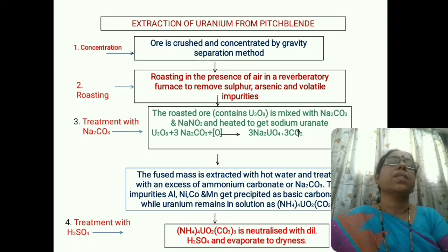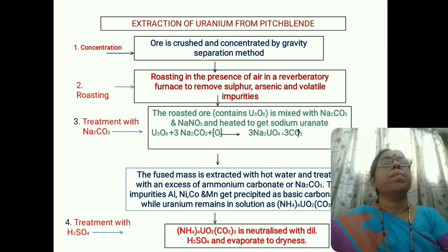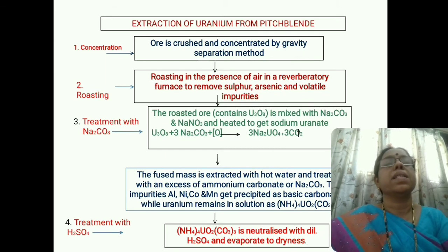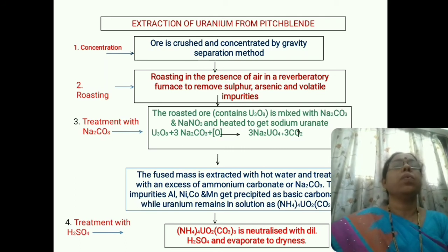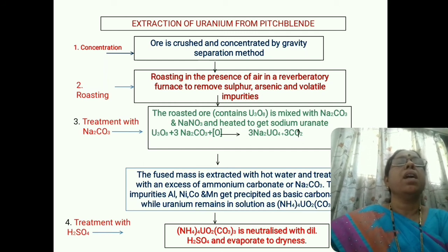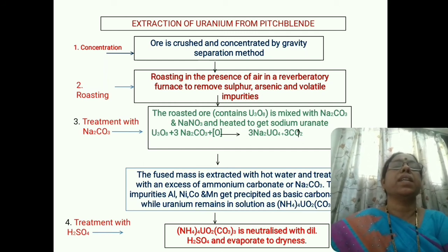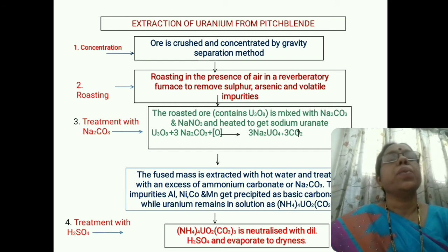Once concentration is over, the concentrated ore is roasted. Roasting is done in a reverberatory furnace in the presence of air to remove impurities like sulfur, arsenic, and other volatile impurities. Once roasting is over, we mix this roasted ore with sodium carbonate and sodium nitrate to get sodium uranate.